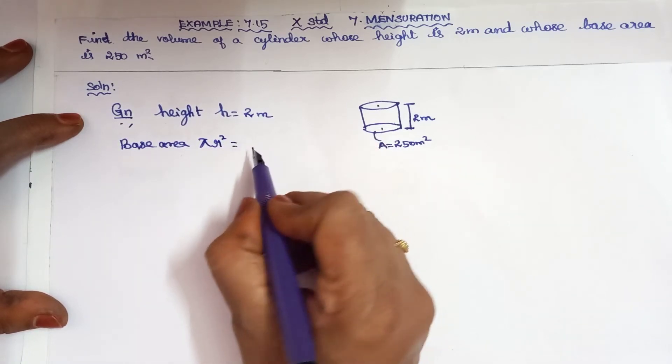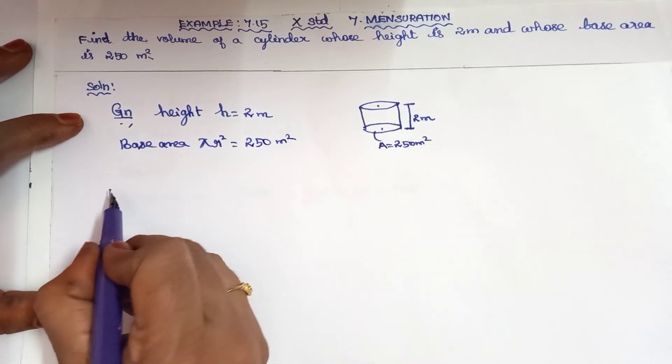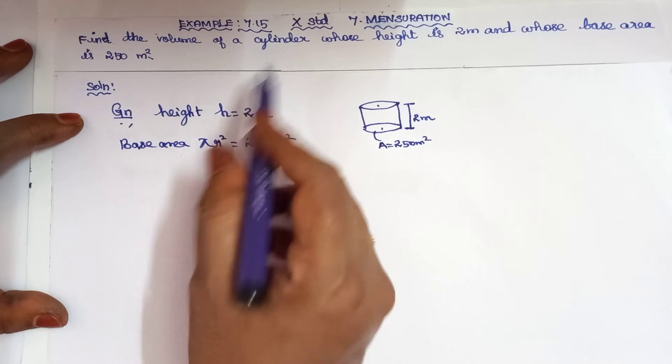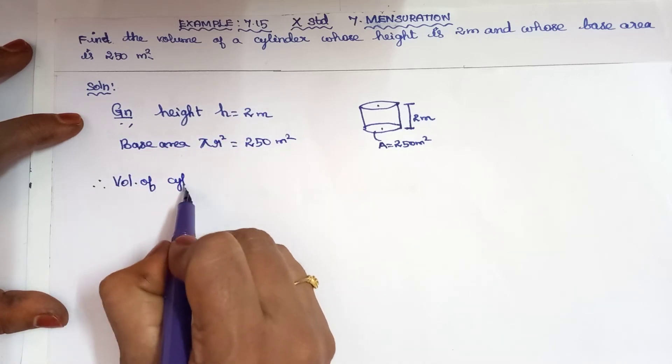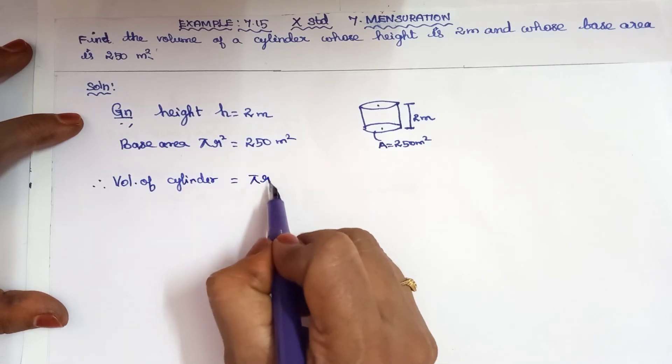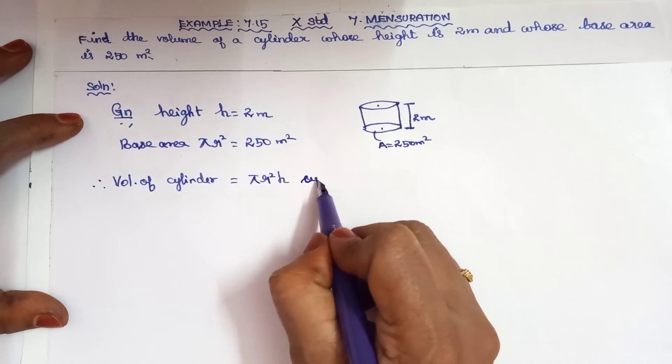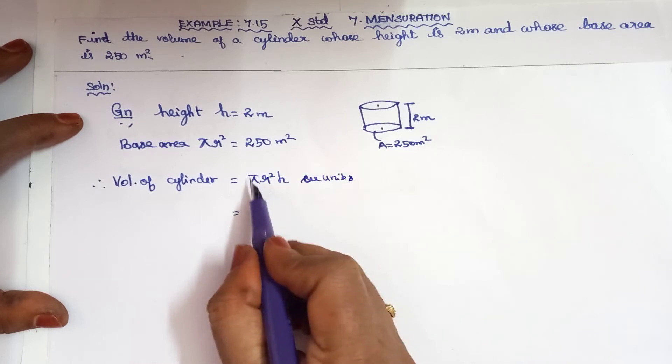Next, to find the volume of cylinder. Therefore, volume of cylinder equals the formula pi r square h in cubic units.